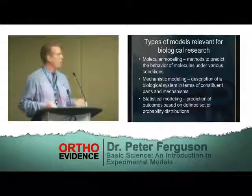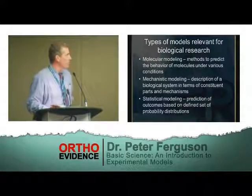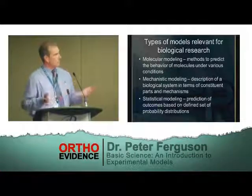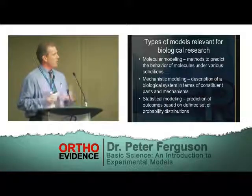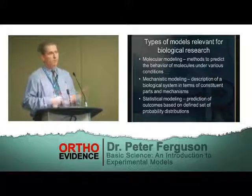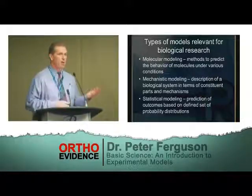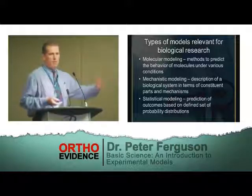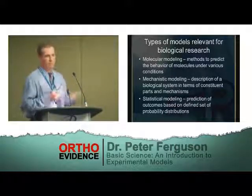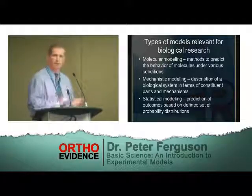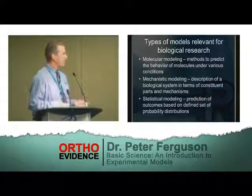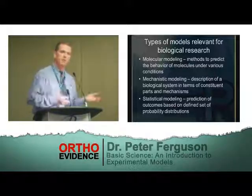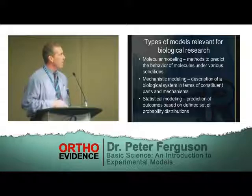There are all kinds of different models pertinent to biological research, and these are just some examples. Molecular modeling: you take known features of molecules — micromolecules, macromolecules — their ionic bonds and so on, and you can predict the behavior of these molecules under various chemical or electromagnetic conditions. Mechanistic modeling: you take a biological description and break it down in terms of different constituent parts and mechanisms — for example, the extensor mechanism. If you apply a force, you can break it down: the effect on the quads, the patella, the patellar tendon, the tibial tubercle. Statistical modeling: prediction of outcomes based on a defined set of known probability distributions. All of these are potentially pertinent and relevant in biological research.